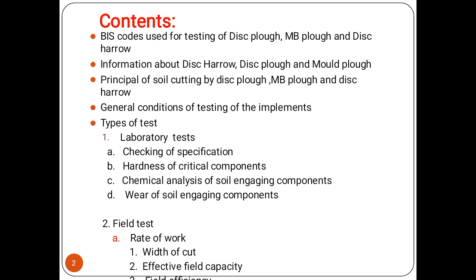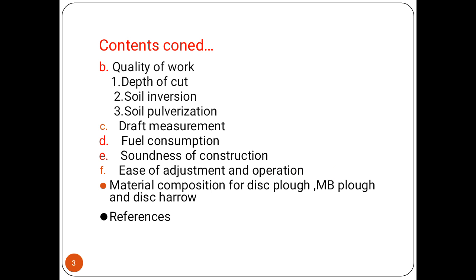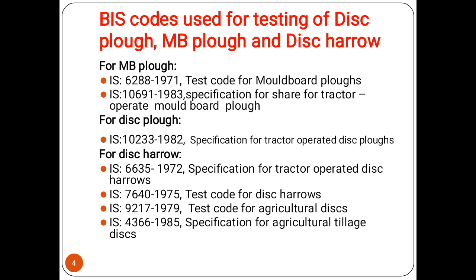The testing includes checking of specifications, hardness of critical components, chemical analysis of soil-engaging components, wear of soil-engaging components, field tests, rate of work, quality of work, draft measurement, fuel consumption, soundness and construction, ease of adjustment and operation, and metal composition of the disk plow, moldboard plow, and disk harrow, as per the BSI code for testing.